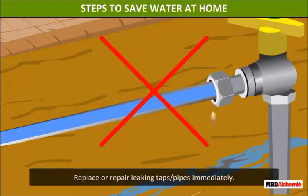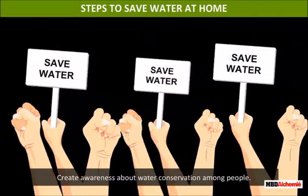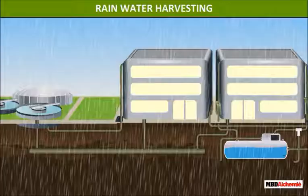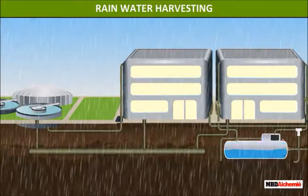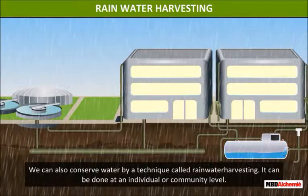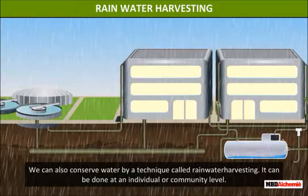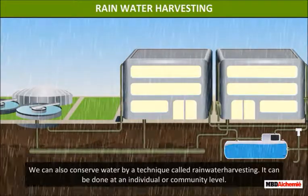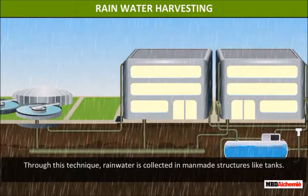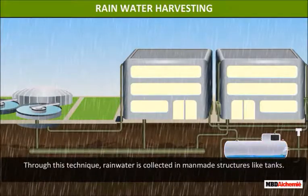Repair leaking taps or pipes immediately and create awareness about water conservation among people. Rainwater harvesting: we can also conserve water by a technique called rainwater harvesting. It can be done at an individual or community level. Through this technique, rainwater is collected in man-made structures like tanks.